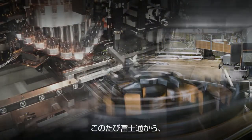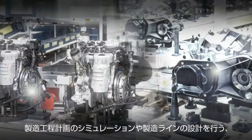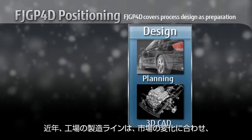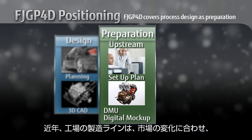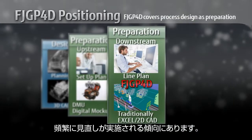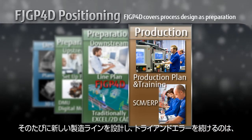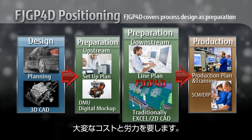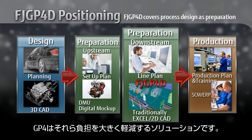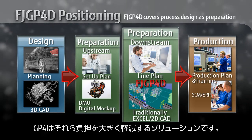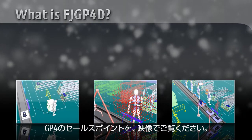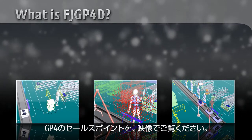Fujitsu proudly introduces GP4, a revolutionary tool for simulating production process plans and designing production lines. Factory production lines are frequently being rearranged to respond to changes in production needs. This is expensive and involves a lot of effort in designing new production lines through trial and error until the optimum line layout is determined. GP4 is a unique solution that greatly reduces the workload involved.